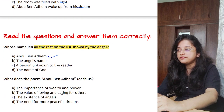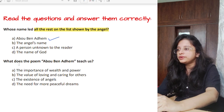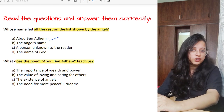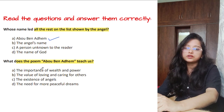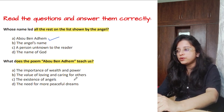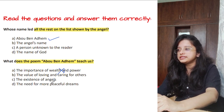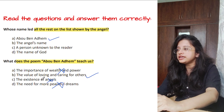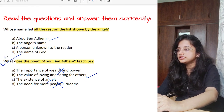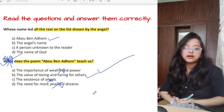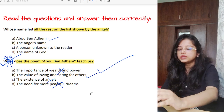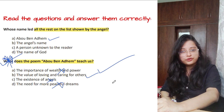The last MCQ question: what does the poem Abu Ben Adham teach us? Options: the importance of wealth and power, the value of loving and caring for others, the existence of angels, or the need for more peaceful dreams. The correct answer is option B — the value of loving and caring for others. This is very important; put a star here because this is definitely going to come in your exam. Loving and caring for others is another way of serving God.